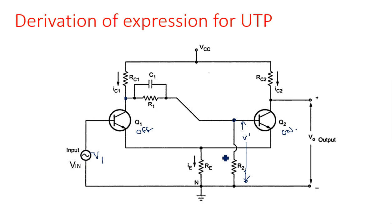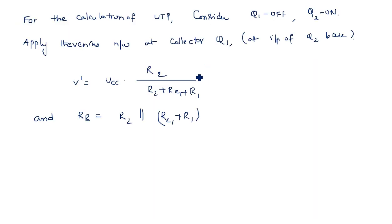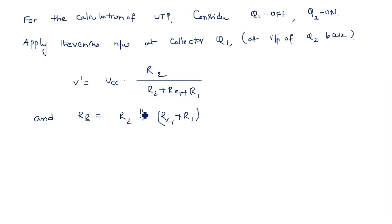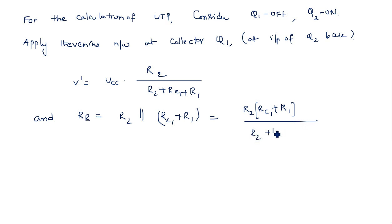The input resistance at the base Rb equals R2 in parallel with (RC1 plus R1). When calculating resistance in the Thevenin equivalent network, the VCC voltage source is grounded, so R2 is in parallel with (R1 plus RC1). Expanding this gives R2 times RC1 plus R1, or taking the LCM: (RC1 plus R1) and (R2 plus RC1 plus R1) over (RC1 plus R1).